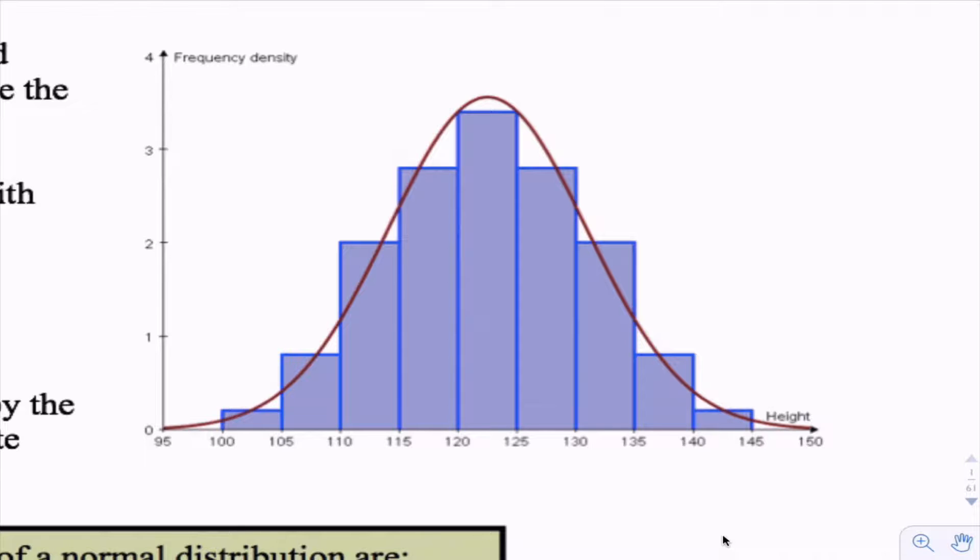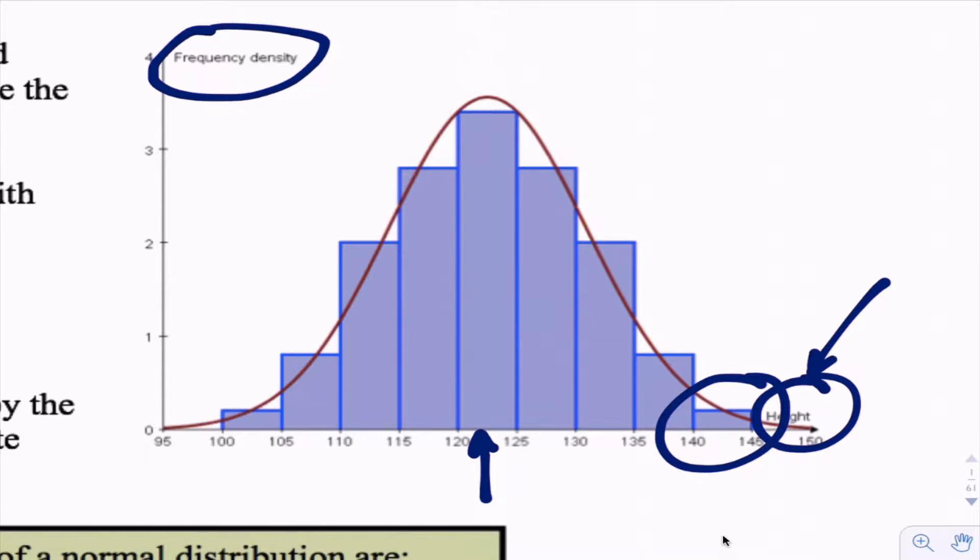When you're looking at it you've got frequency density along the vertical axis and along the bottom you've got height or weight or time or so many different variables. Most of the values are centered around the middle of the distribution and there's a variation that goes out from that. Most people are grouped around the middle and that grouping follows this bell-shaped curve.